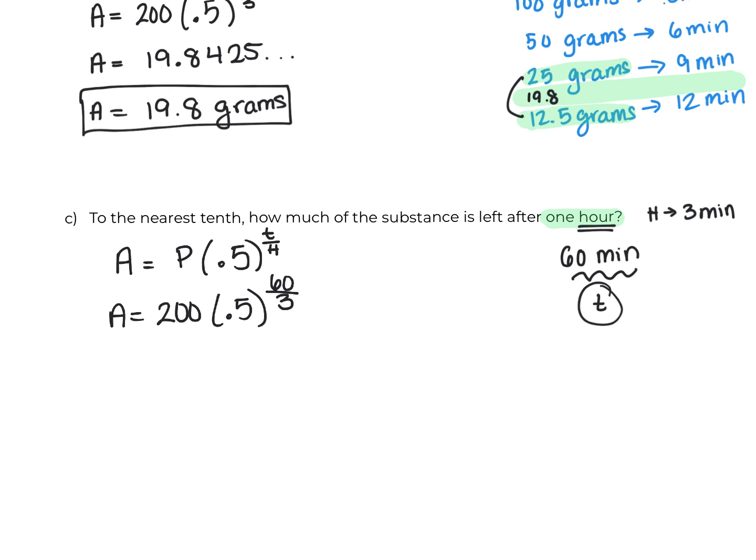All right, so you should have gotten a very interesting number. You should have gotten 1.907 and then a whole bunch of numbers, and then there's an E to the negative 4 next to it. You have to understand that that means scientific notation.